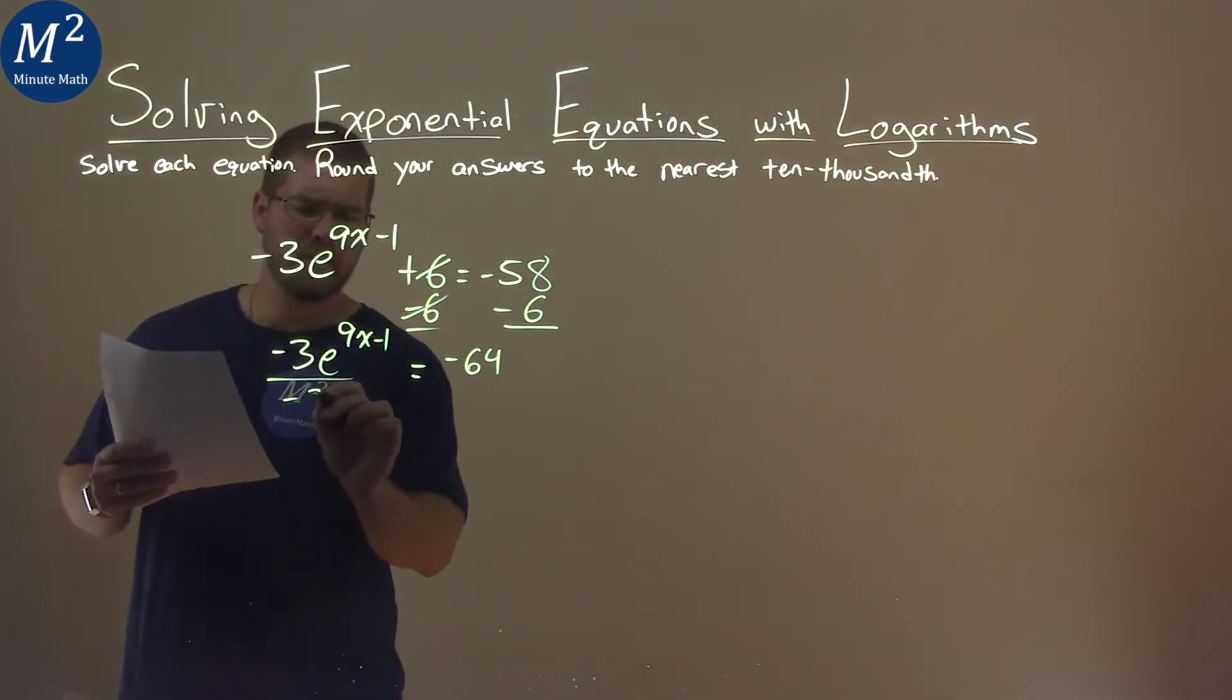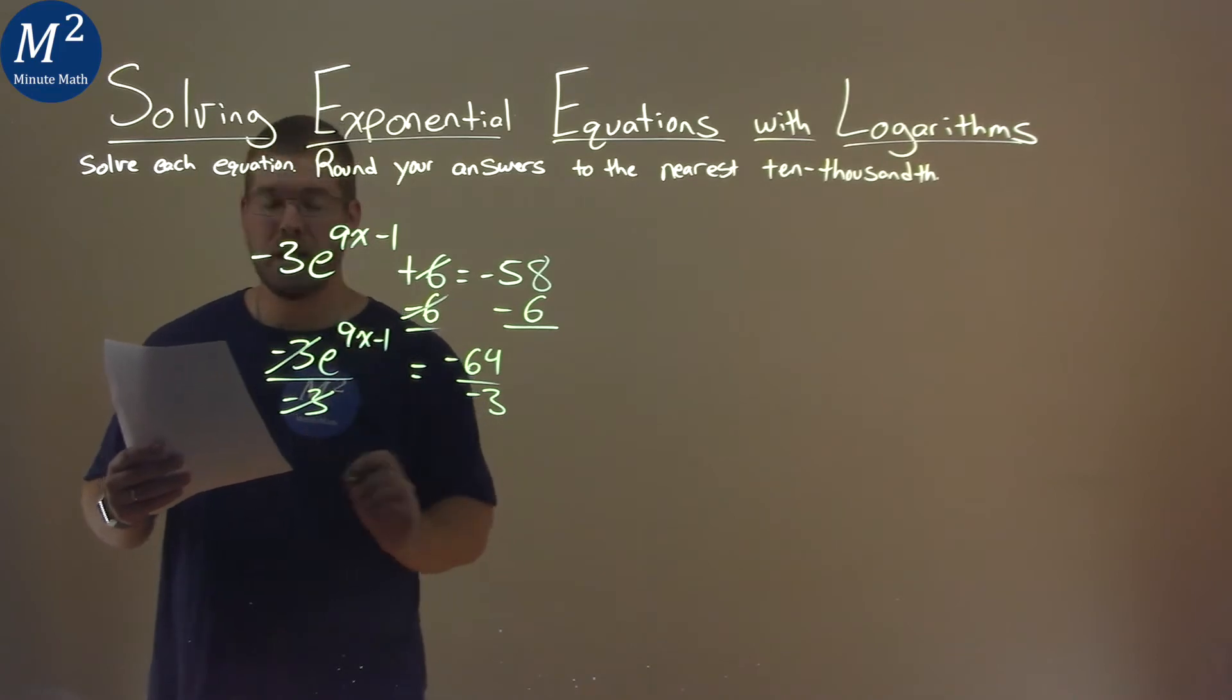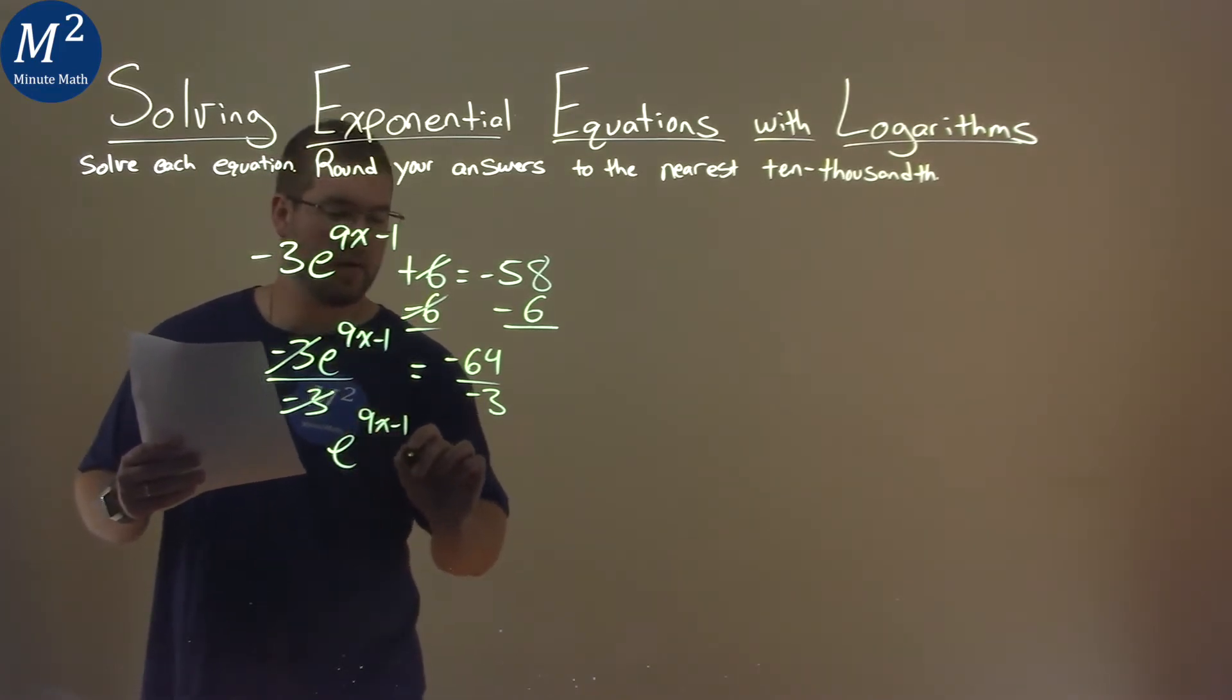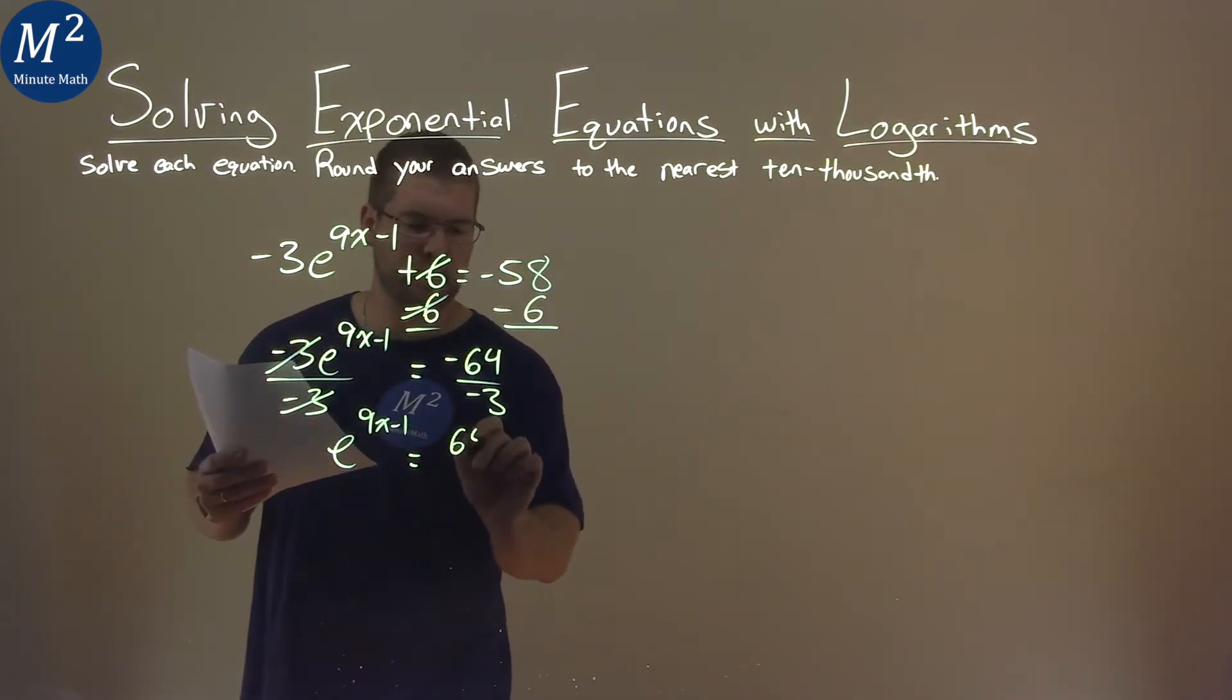I now divide both sides by negative 3. Negative 3s cancel on the left, and we have e to the 9x minus 1 power is equal to—well, the negatives cancel, and we have a positive 64 over 3.